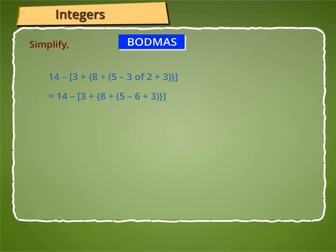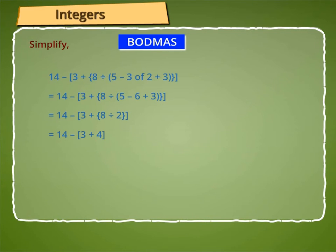This gives us 14 minus 3 plus 8 divided by 2, which is equal to 14 minus 3 plus 4, or 14 minus 7, which gives us 7.